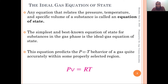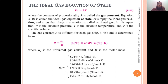PV = RT is the ideal gas equation of state. Here P is pressure, small v is specific volume, T is temperature, and R is the gas constant. The gas constant has different values for different gases — that is why it is called the gas constant — and R has units of kJ/kg·K. You can get the gas constant value by dividing the universal gas constant by the molecular mass of that particular gas.